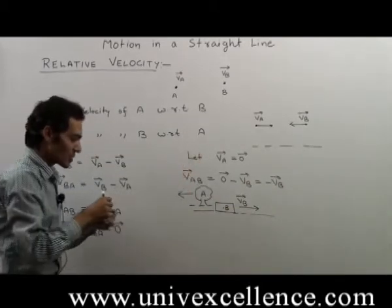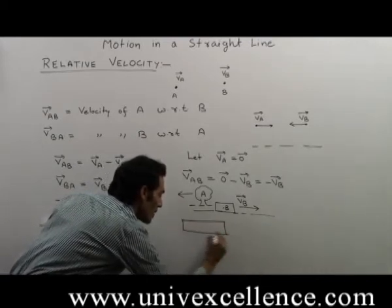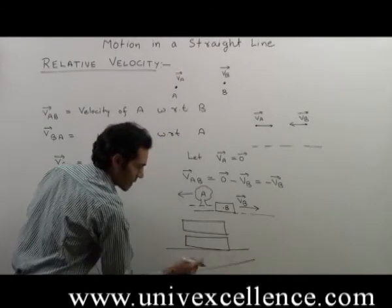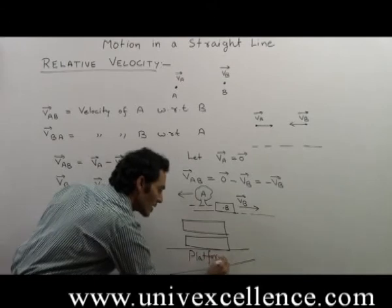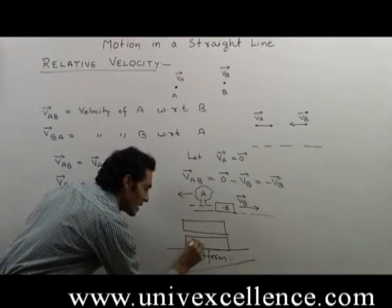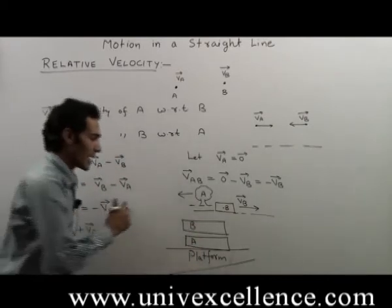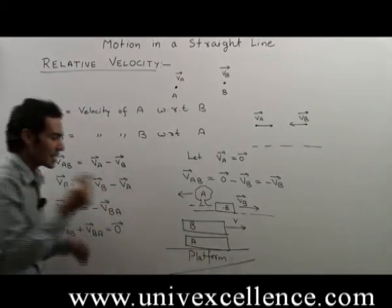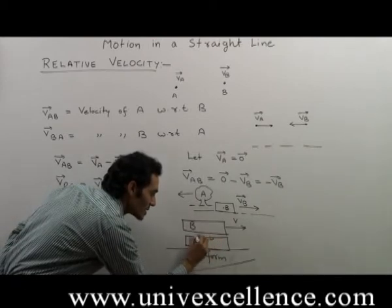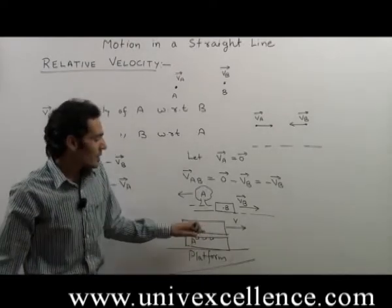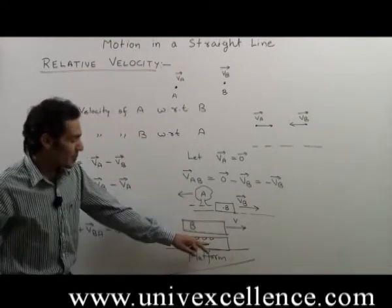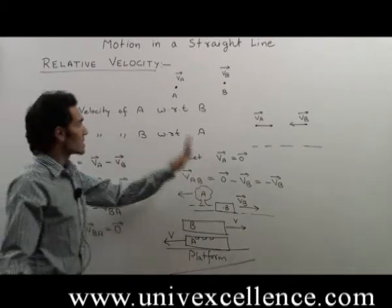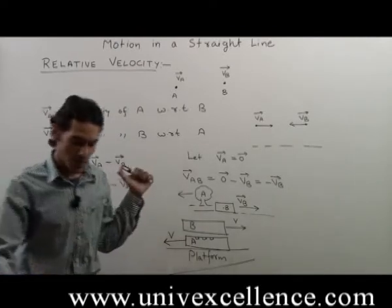Another example: suppose there are two trains standing on the platform side by side on parallel railway tracks. Suppose this is train A and this is train B. Now suppose train B starts moving in this direction with velocity V. Then the person sitting inside train A, when they see the motion of train B, it appears to them that train A has started moving in the opposite direction with the same velocity. So the concept of relative velocity is an important one while solving problems.